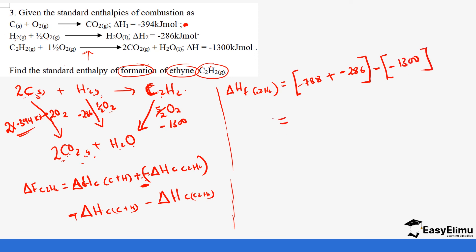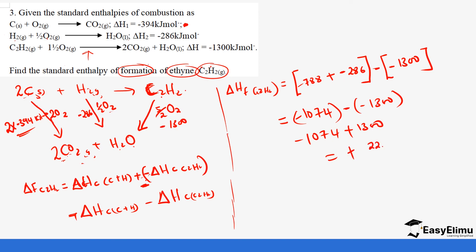So −788 plus −286 gives −1074, and then minus minus 1300 is the same as −1074 + 1300, which gives positive 226 kilojoules per mole. This is the enthalpy of formation of ethyne. That is how we use Hess law to calculate enthalpy of formation. You can go ahead and convert this into an energy level diagram as practice. That brings us to the end — see you in the next lesson.